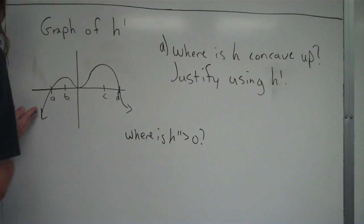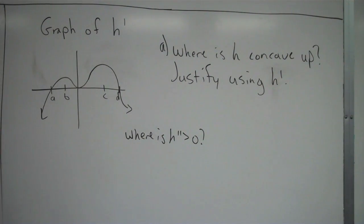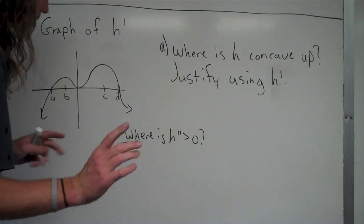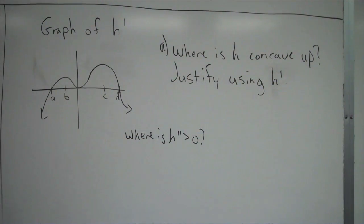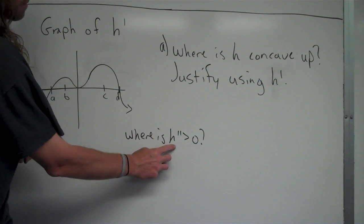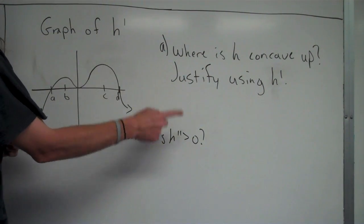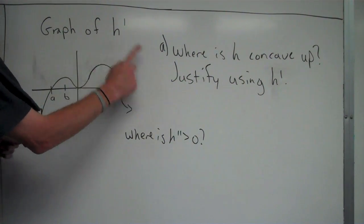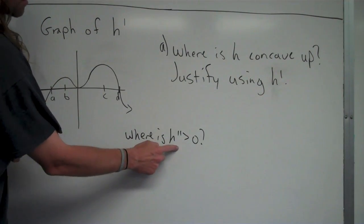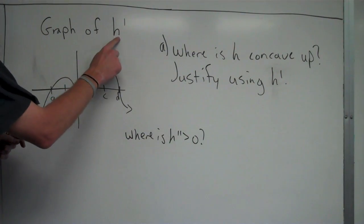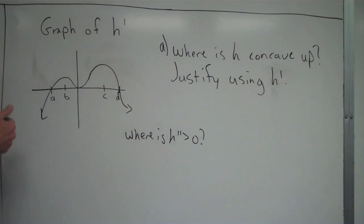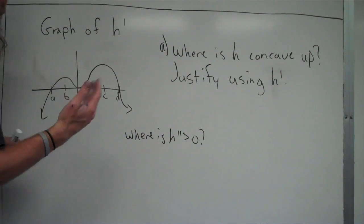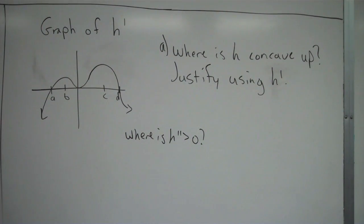So what we can do is look at the slopes of H prime to determine the values of H double prime. Where the slopes of H prime are positive, the values of H double prime are positive. So if we want to know where H double prime is greater than zero, we want to know where the slope of H prime is positive — another way of saying where H prime is increasing.